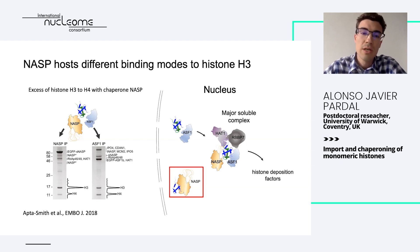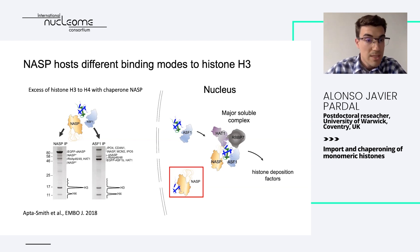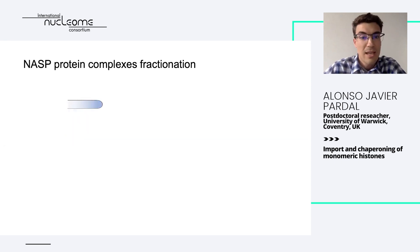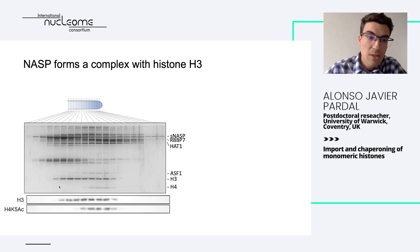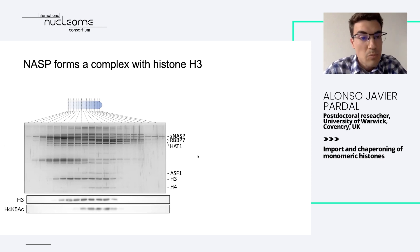Here is where my postdoc work comes in. I wanted to further determine the binding interactions that could happen in these different modes of NASP binding. I started by taking these pulldowns, fractionating them, and seeing which different interactions were present. To do this, I used gentle separation based on glycerol gradients, which by high-speed centrifugation can be split into different fractions. We saw indeed highly rich NASP bands corresponding to H3 where we couldn't detect any H4, and then we could detect H4 and H3 together with the components HAT1 and RBAP7 of the major soluble complex.